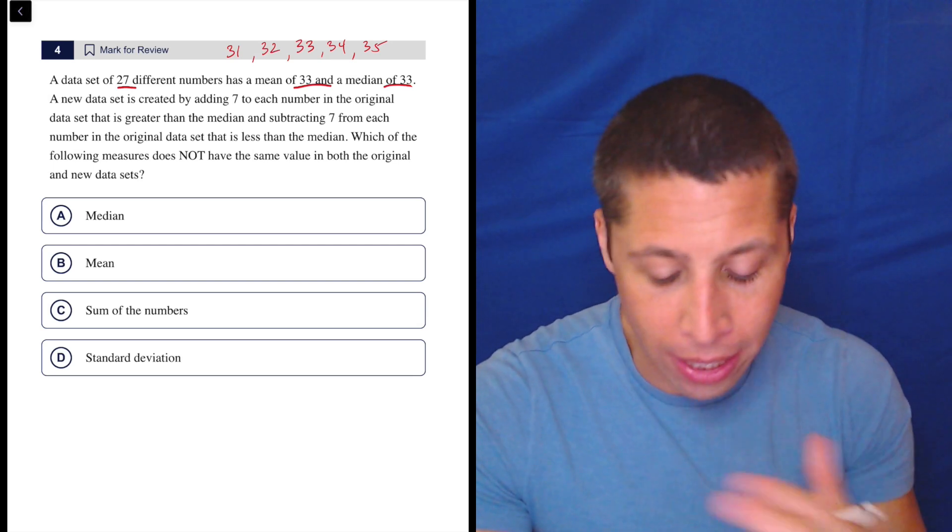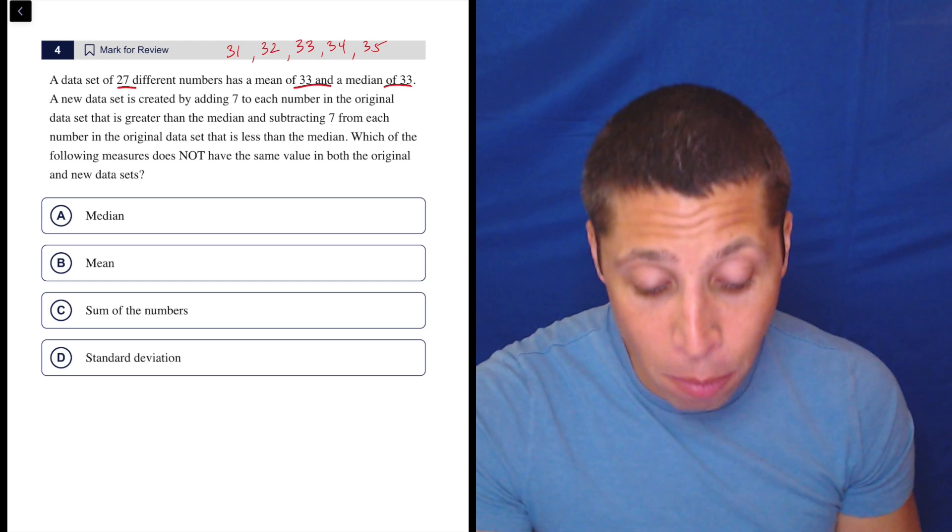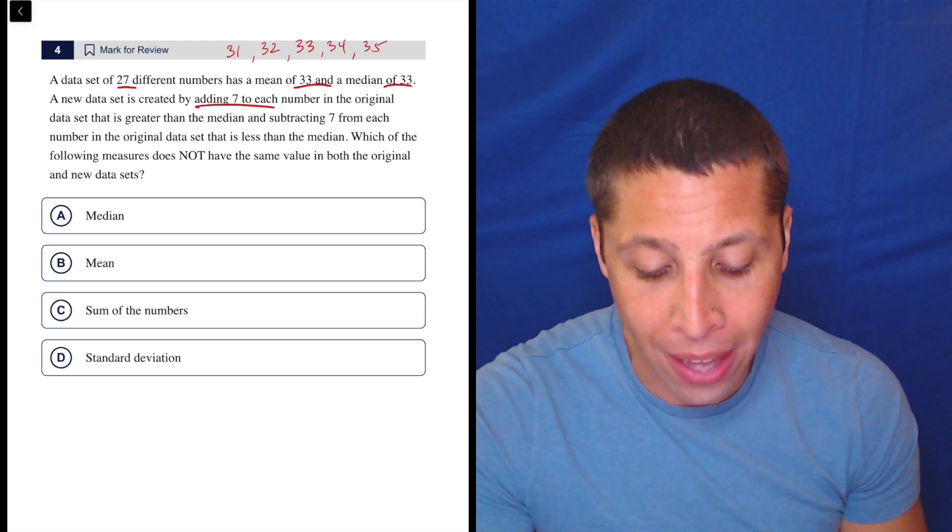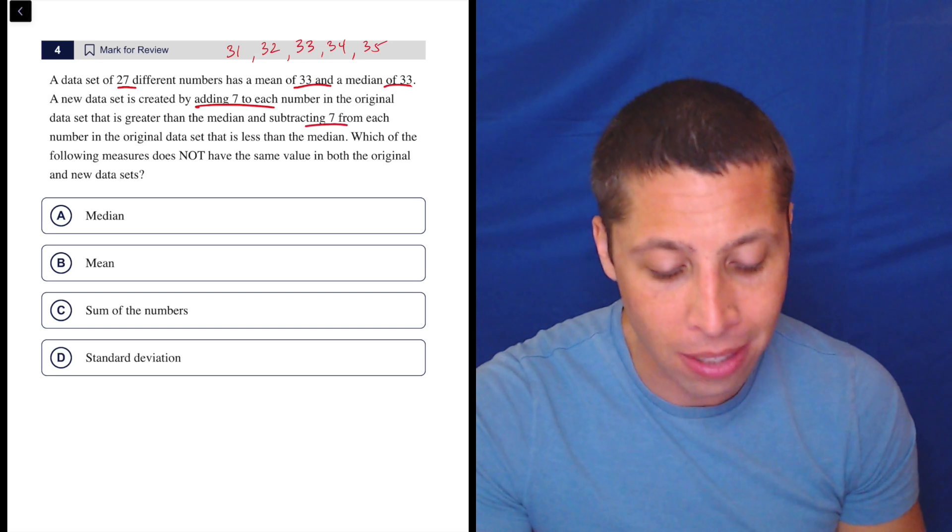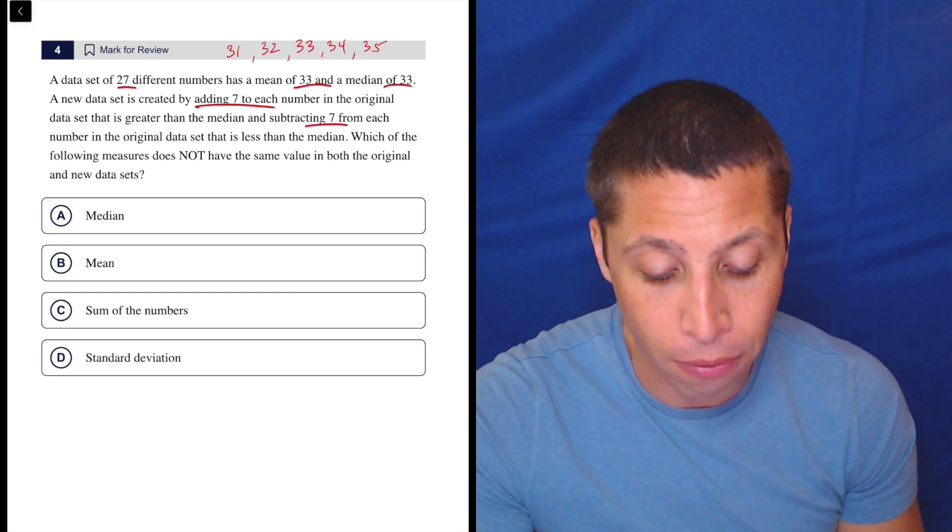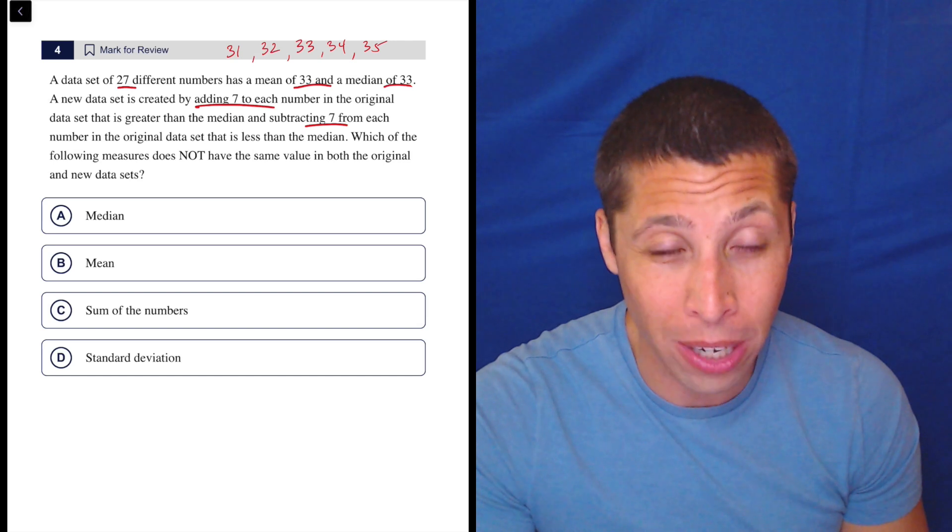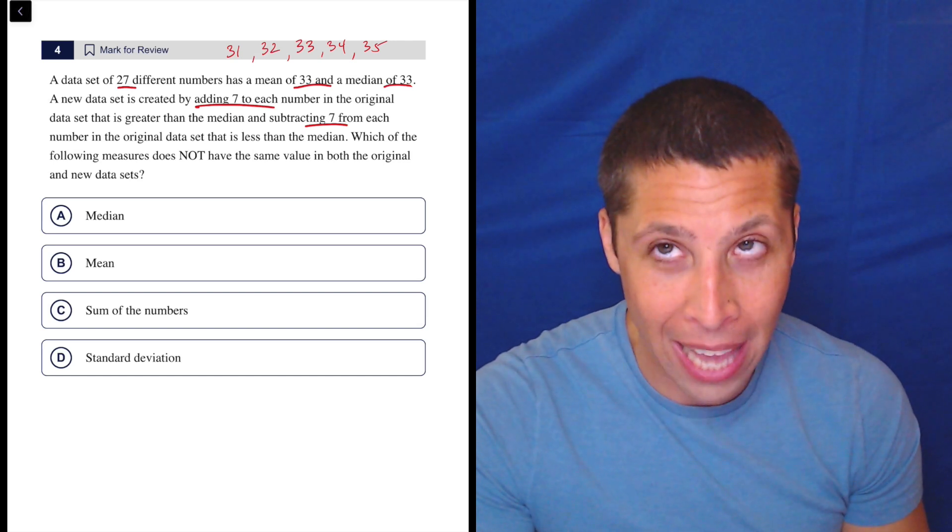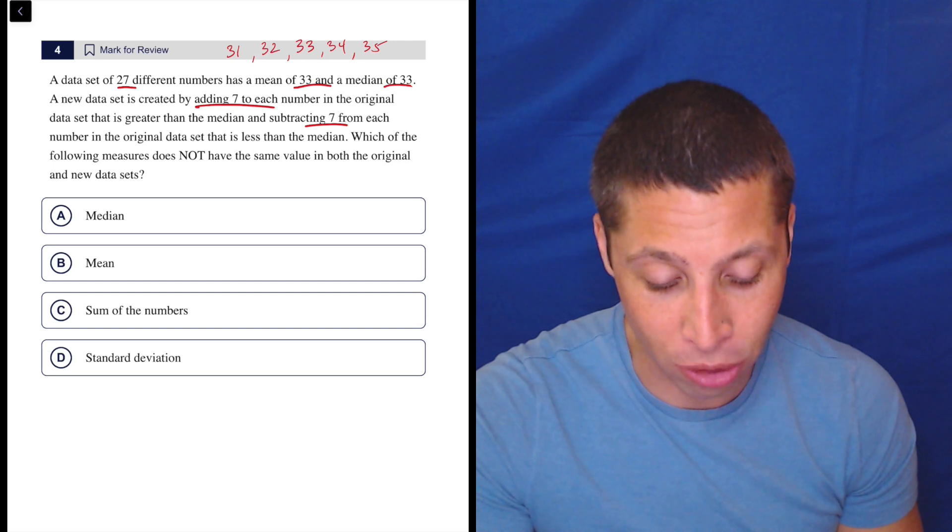So yeah, we could go all the way to either end and think about it and then it would be much easier to follow the instruction, adding 7 to each number that is greater than the median and subtracting 7 from each number that is less than the median. So basically that 34 would become a 41 and the 32 would become a 25, right? You're going to just follow that instruction.